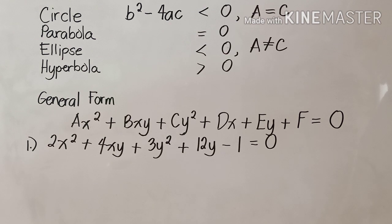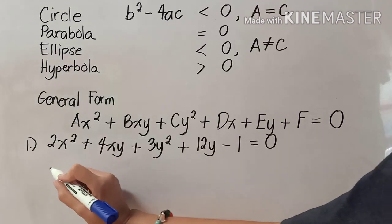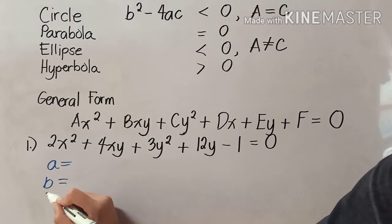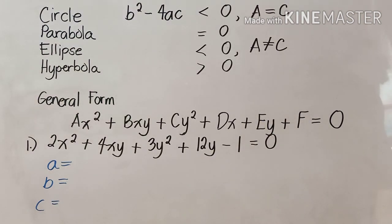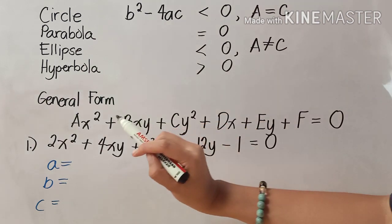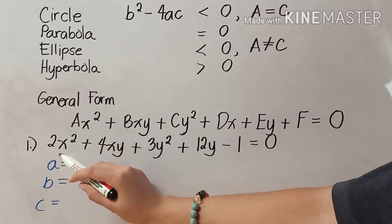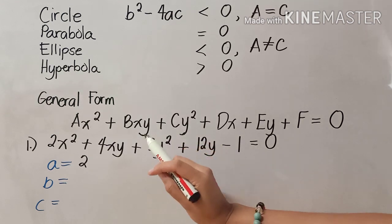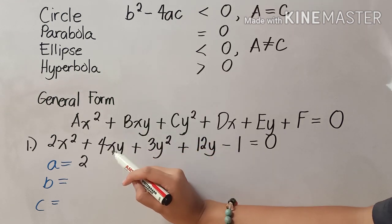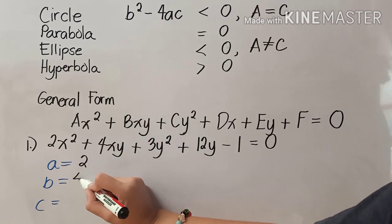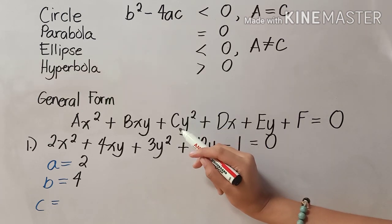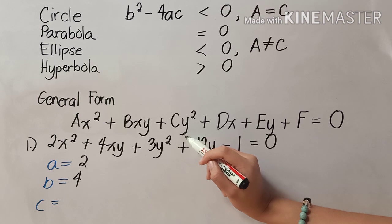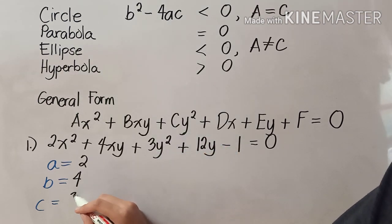Let us now answer number one: 2x squared plus 4xy plus 3y squared plus 12y minus 1 equals zero. We will first identify the values of a, b, and c. In the general form, x squared is beside a, and in our given, 2 is beside x squared, so a equals 2. B is beside xy, and in our given, 4 is beside xy, therefore b equals 4. C is beside y squared, and in our given, 3 is beside y squared, therefore c equals 3.